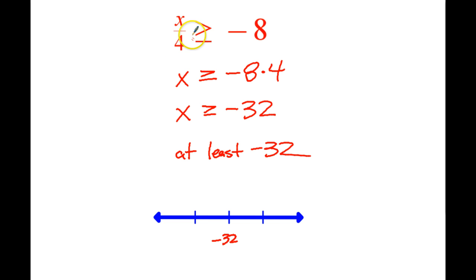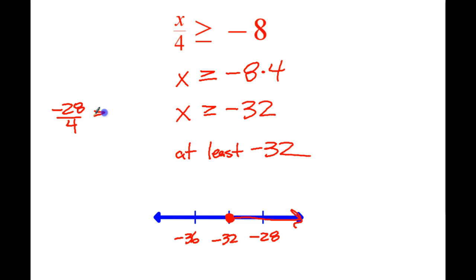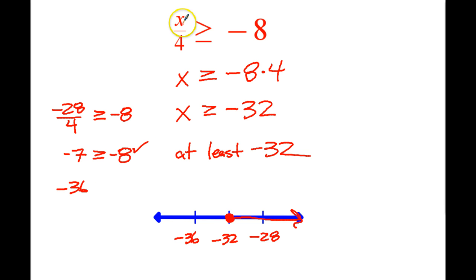So we'll put in negative 32 on the number line, going by 4s: negative 32, negative 28, negative 36. Greater than or equal to negative 32 means solid circle, shade to the right. Let's try negative 28: negative 28 divided by 4 is negative 7. Is that higher than negative 8? Yes. Let's try negative 36: negative 36 divided by 4 is negative 9. Is that greater than or equal to negative 8? No — negative 9 is lower than negative 8. So our solution works. Don't worry, we'll have a lot more practice. If you have any questions, we can get through them.